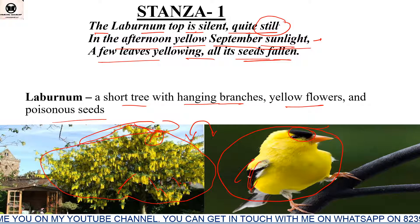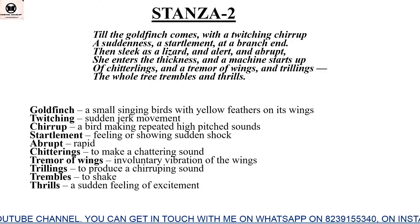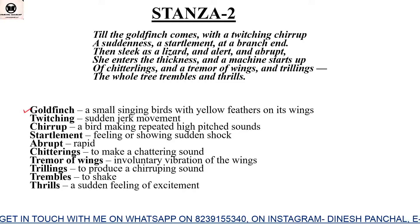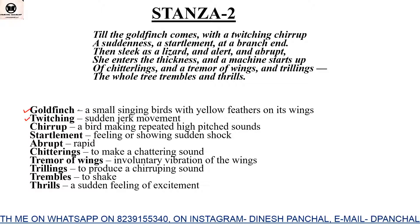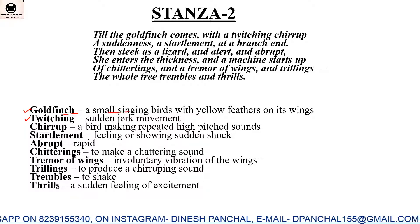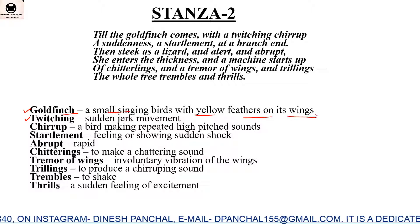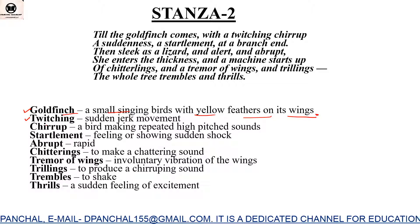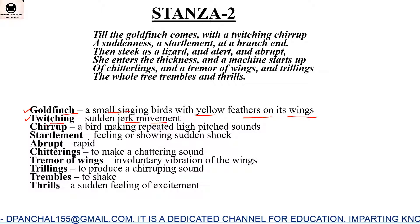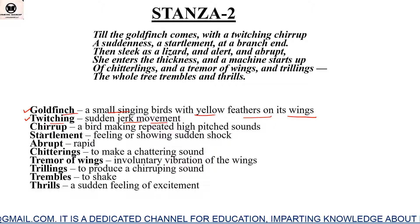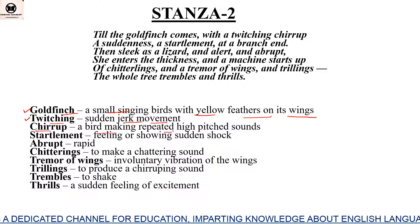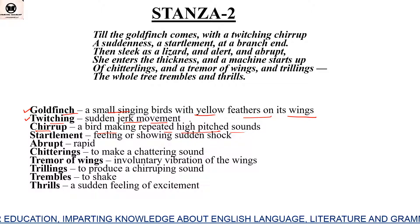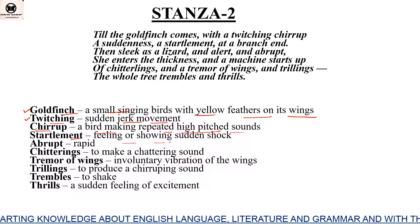Now let's talk about the second stanza. First let us look at the difficult words used here. 'Goldfinch' — a small singing bird with yellow feathers on its wings. 'Twitching' means a sudden jerk or rapid movement. 'Chirrup' — a bird making repeated high-pitched sounds. 'Startlement' — feeling and showing sudden shock.